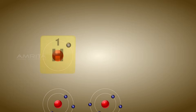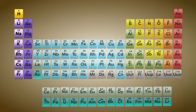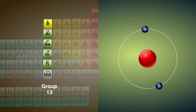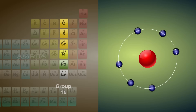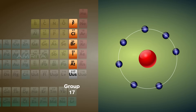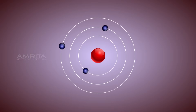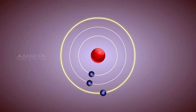The model next proposes that the maximum number of electrons that can be accommodated in the outermost level is 8. And finally, it states that the orbit closest to the nucleus has minimum energy and the orbit farthest from the nucleus has maximum energy.